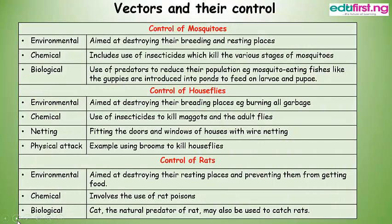Let's discuss how these vectors can be controlled. Mosquitoes. Environmental method: aimed at destroying the breeding and resting places. Chemical method: includes use of insecticides which kill the various stages of mosquitoes. Biological method: use of predators to reduce the population — for example, mosquito-eating fishes like guppies are introduced into ponds to feed on larvae and pupae.